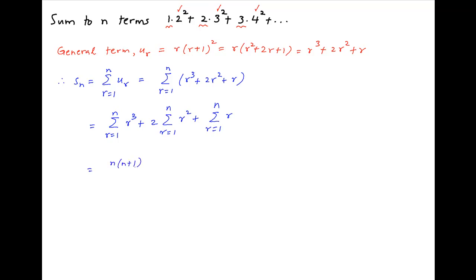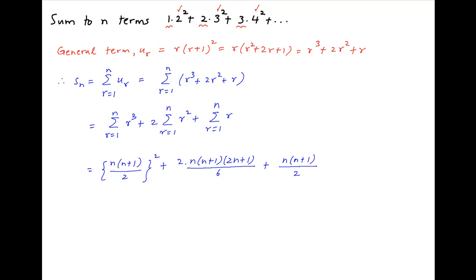Substituting the values of summation r³, summation r², and summation r, we get S_n equal to [n(n+1)/2]² plus 2 times n(n+1)(2n+1)/6, plus n(n+1)/2.